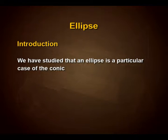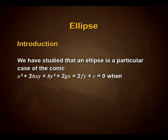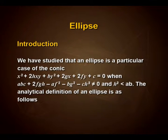Hello students. Under conic sections, as we have already discussed about circles, hyperbola, and parabola, in this session we will discuss about ellipse. We have studied that an ellipse is a particular case of the conic ax² + 2hxy + by² + 2gx + 2fy + c = 0, when abc + 2fgh - af² - bg² - ch² ≠ 0 and h² < ab.